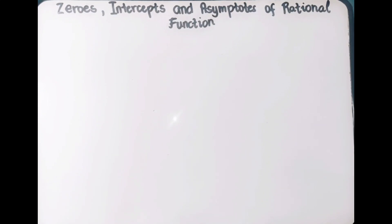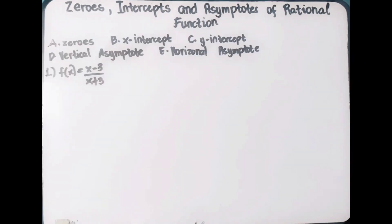Hello everyone. Our topic for this video is finding the zeros, intercepts, and asymptotes of rational functions. For each given function, determine the zeros, x-intercept, y-intercept, vertical asymptote, and horizontal asymptote. Let us have number one: f of x equals x minus 3 over x plus 3.